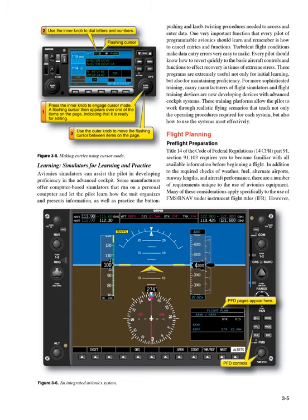Flight Planning Preflight Preparation. Title 14 of the Code of Federal Regulations (14 CFR), Part 91, Section 91.103, requires you to become familiar with all available information before beginning a flight. In addition to the required checks of weather, fuel, alternate airports, runway lengths, and aircraft performance, there are a number of requirements unique to the use of avionics equipment. Many of these considerations apply specifically to the use of FMS/RNAV under instrument flight rules (IFR).